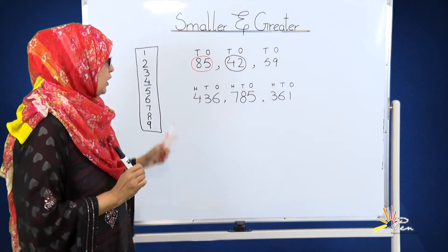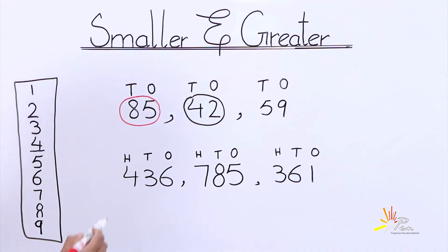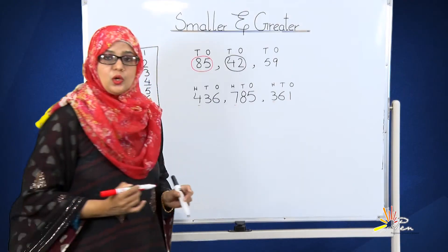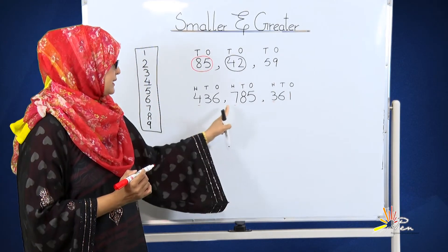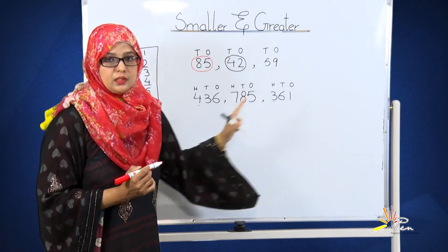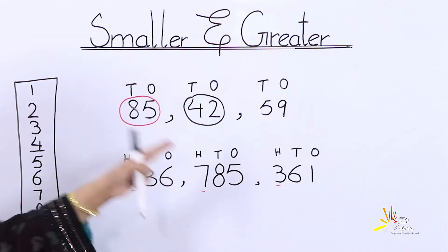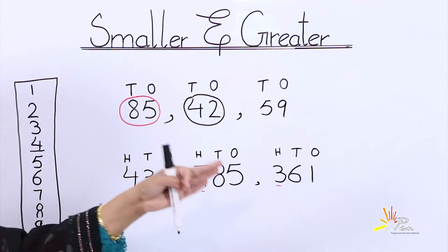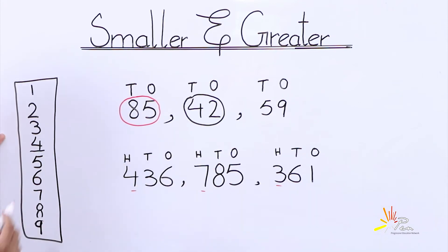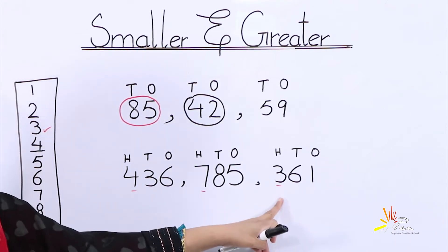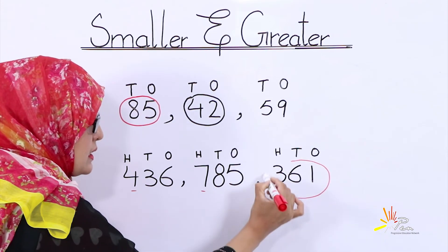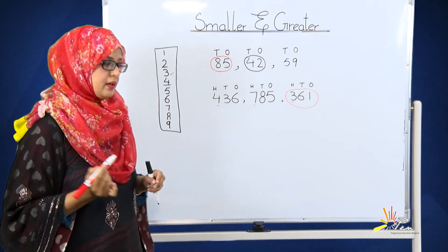We will observe the hundreds place numbers: four, seven and three. Let us see these numbers in this table. Keep in mind: four, seven and three. We found three first. It means this number — three hundred and sixty-one — will be considered the smaller number.